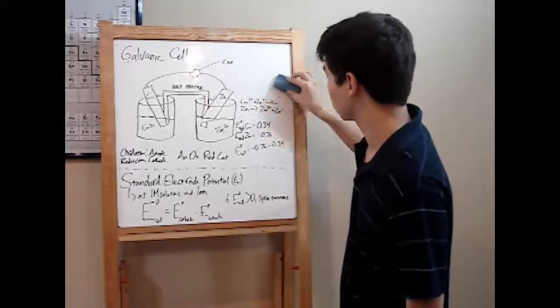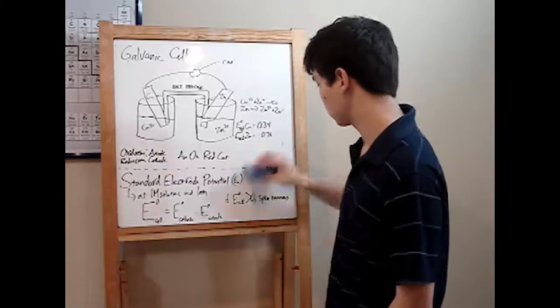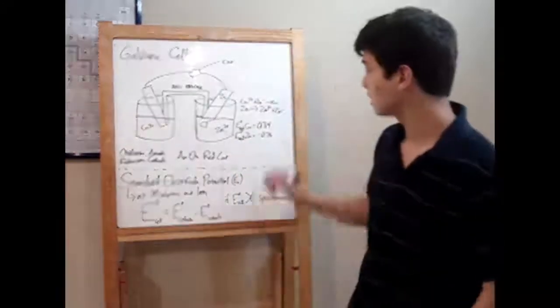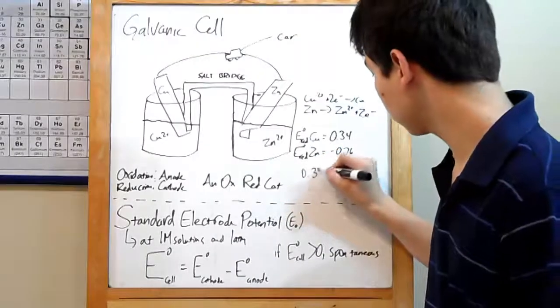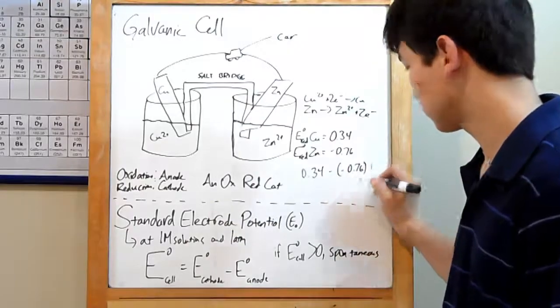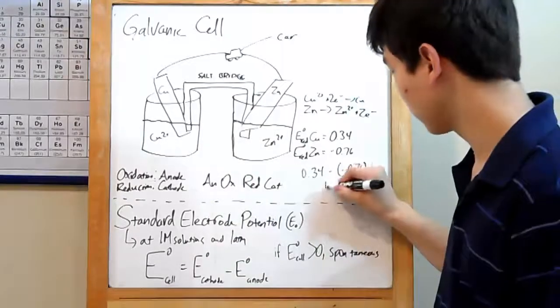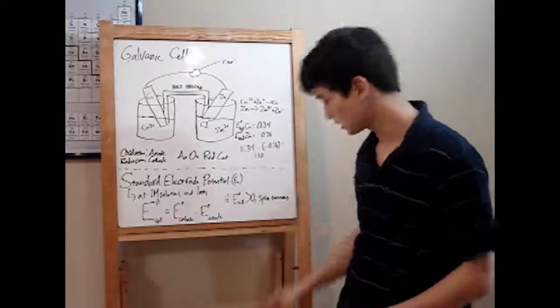That leaves us with this other one, where copper is being reduced instead. Let's test it out using our standard electrode potentials. That puts copper at the cathode. So then that's 0.34 minus zinc at the anode, negative 0.76. That gives us a positive number, 1.10. So that's the spontaneous reaction. This is how it's going to occur.